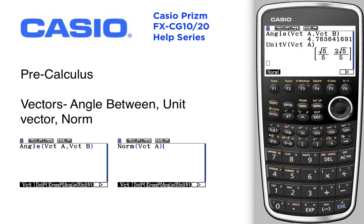Finally, let's find the norm of a vector. Find the norm of vector B.